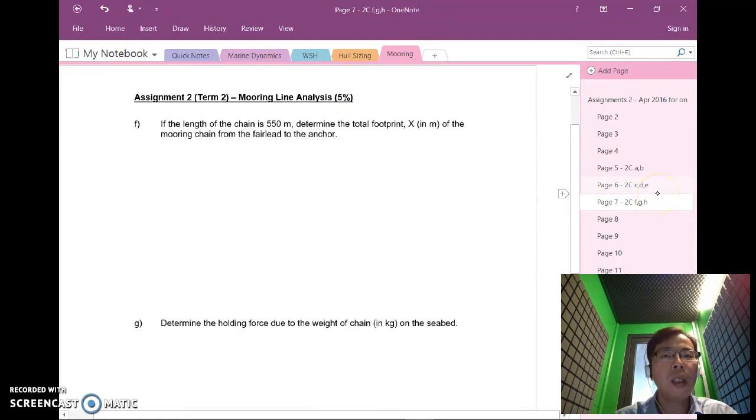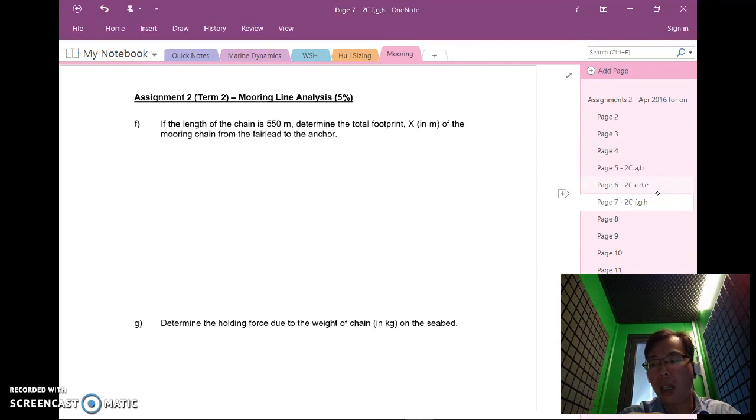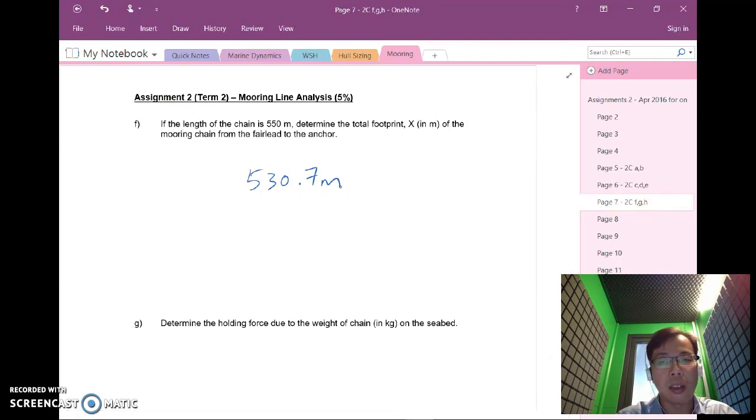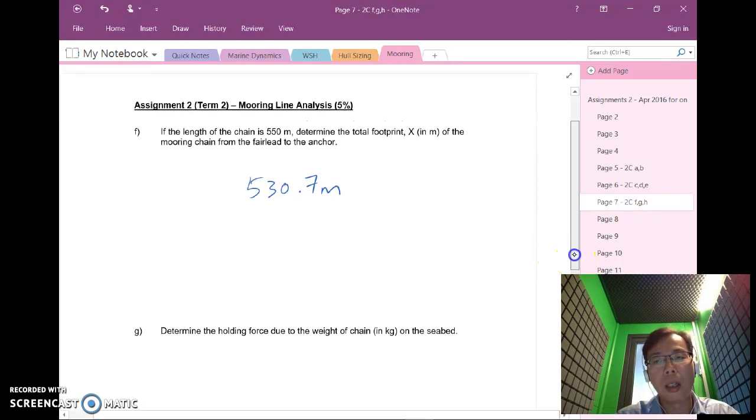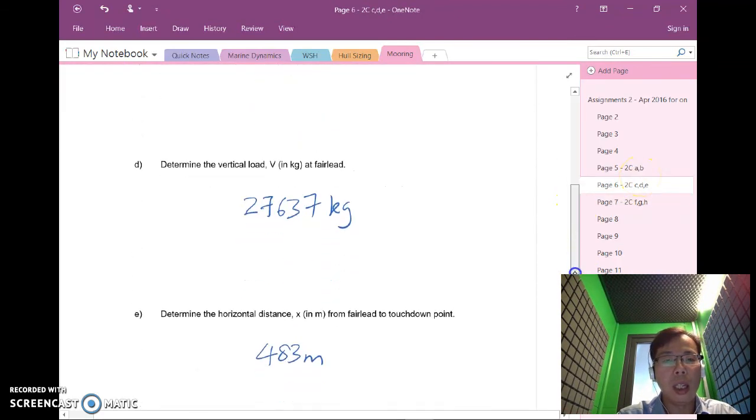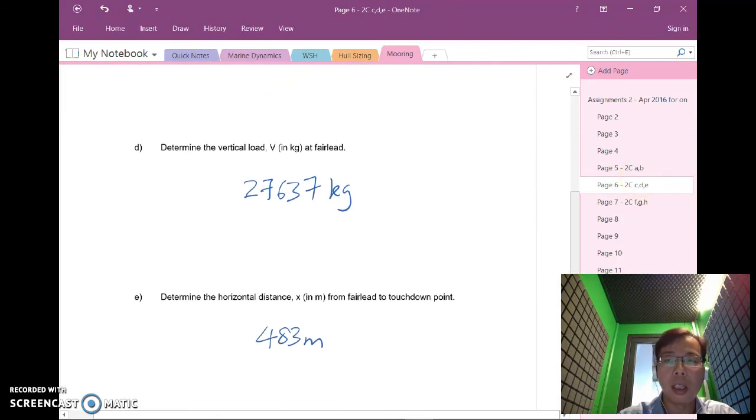Let's proceed to f, g and h. For f we're required to find the total footprint. You don't have to use the expression earlier on. In this case let me give you the answer which is 530.7 meters. And finally the holding force which I will do in a next exercise because I need to explain what a holding force is.